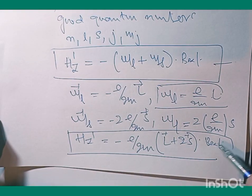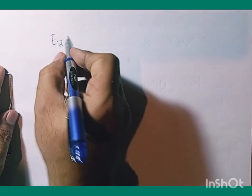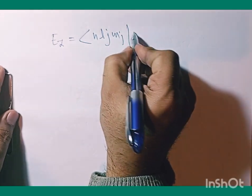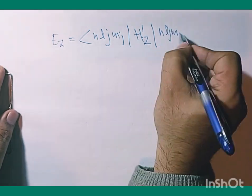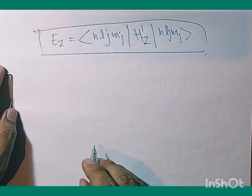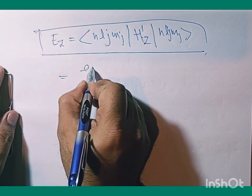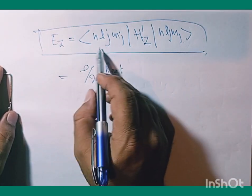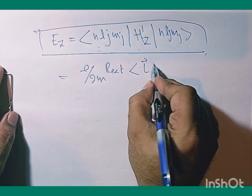To calculate the first-order energy correction, we evaluate the expectation value ⟨n, L, J, M_J | H_Z' | n, L, J, M_J⟩, which gives (e/2m)B_external times the expectation of (L + 2S). Since L + 2S = (L + S) + S = J + S, the correction becomes (e/2m)B_external times the expectation of (J + S).